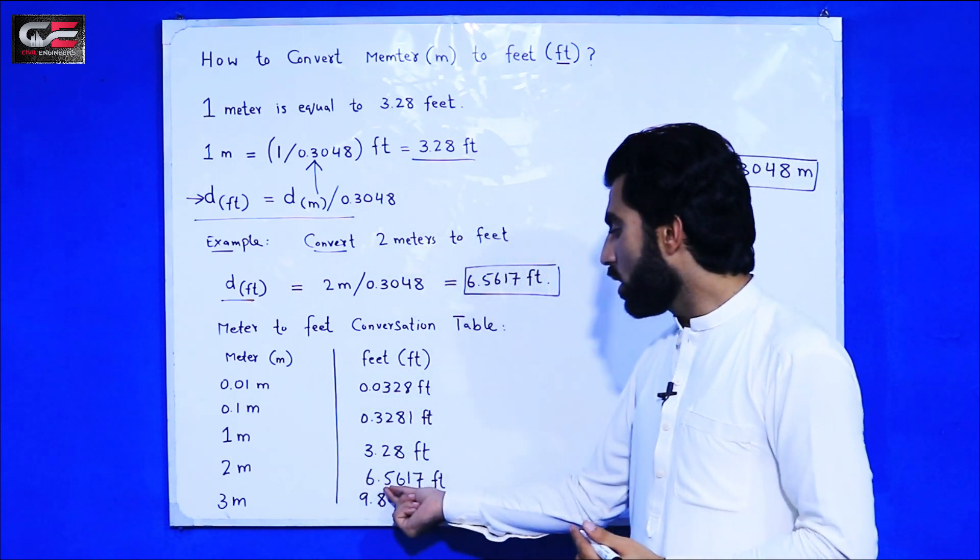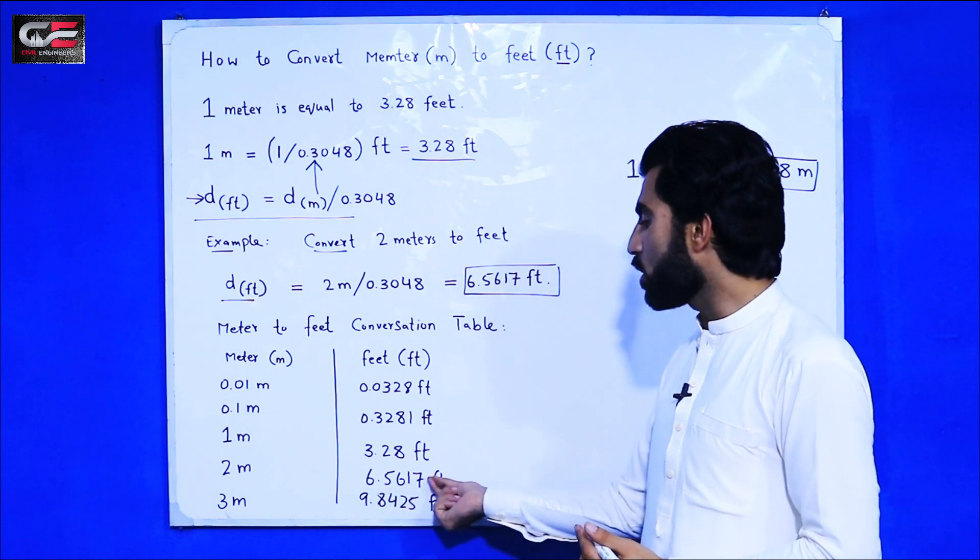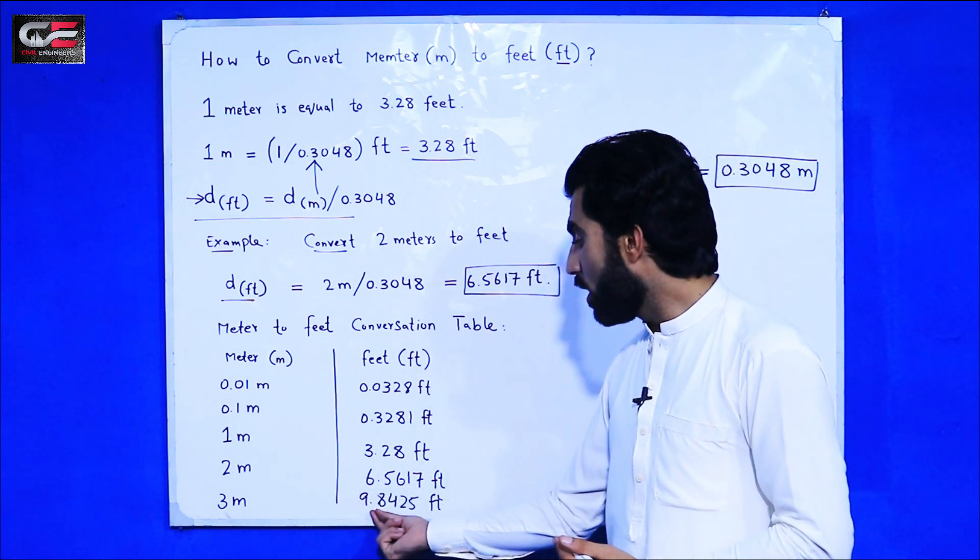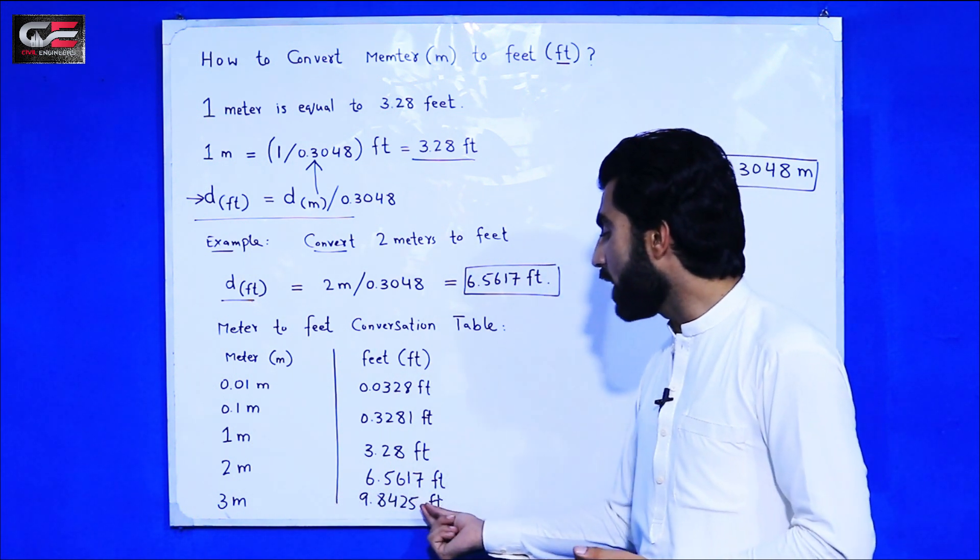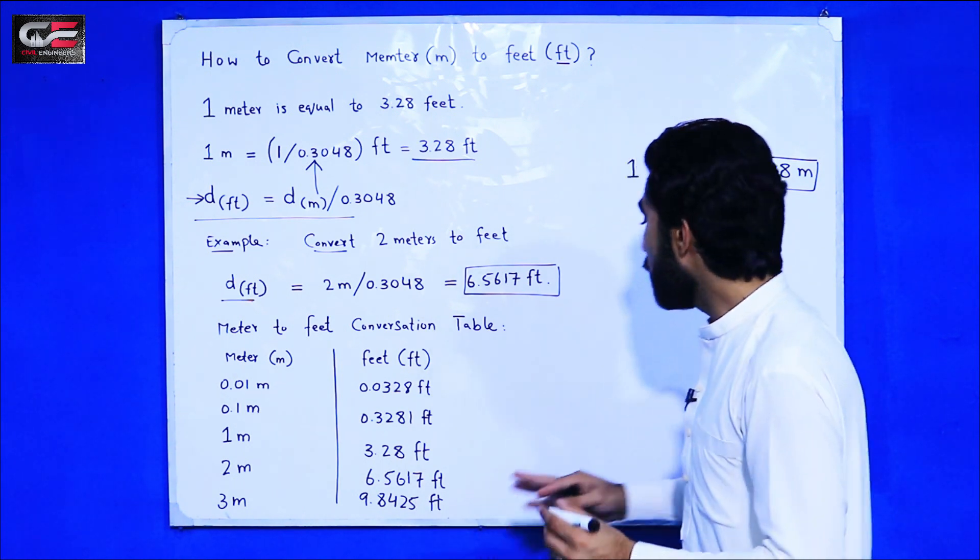Same for 2 meter is equal to 6.5617 feet. 3 meter is 9.8425 feet. So if you have any number, for example if you have 20 meters.